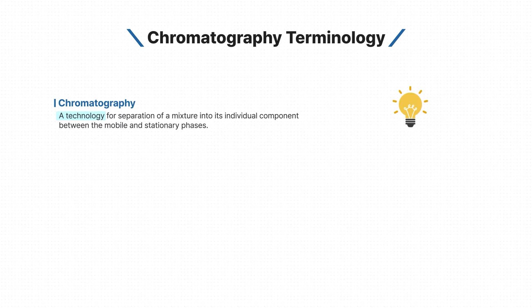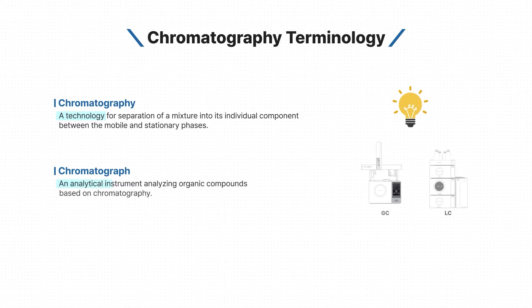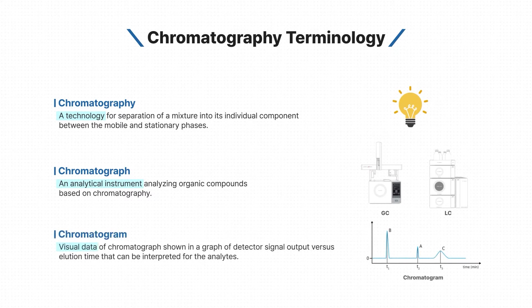What's the difference among chromatography, chromatograph, and chromatogram? Chromatography is a technology for the separation of a mixture into its individual components between the mobile and stationary phases. Chromatograph is an analytical instrument analyzing organic compounds based on chromatography. Chromatogram is visual data of a chromatograph, shown in a graph of detector signal output versus elution time, that can be interpreted for the analytes.